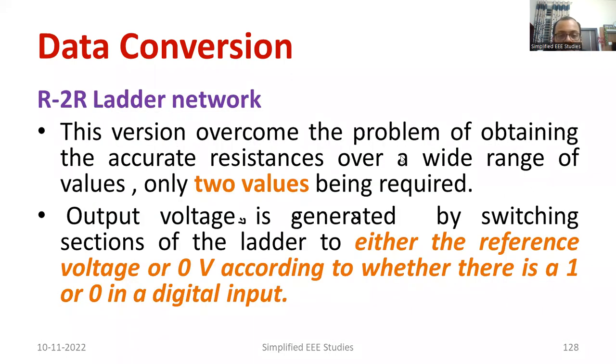So in R2R network, the problem of finding out the resistor is overcome. Because we have only two values of resistor, one is R, another is 2R.